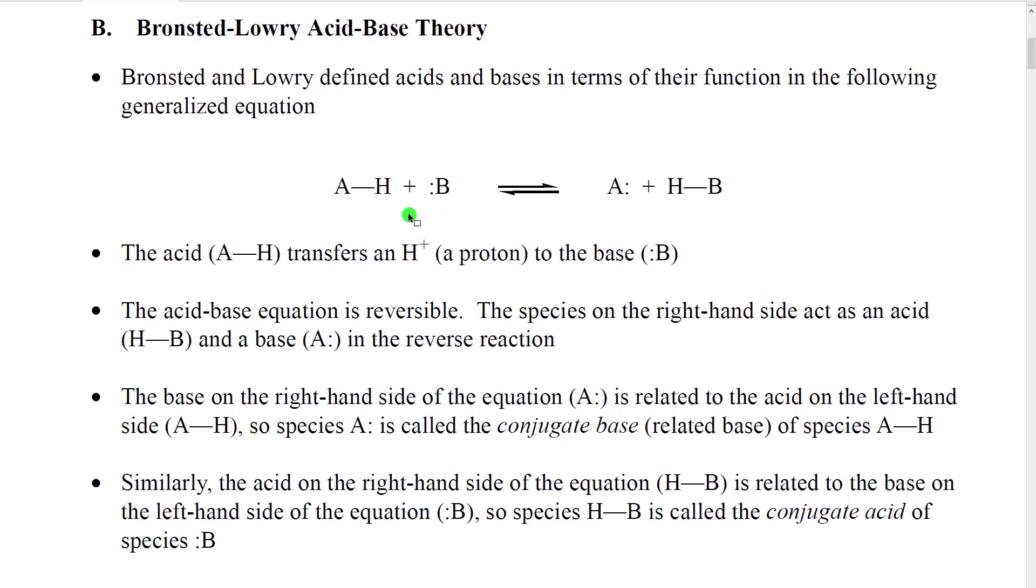In the Bronsted-Lowry acid base theory, what they believed was that the base would use this pair of electrons to make a bond to this hydrogen on the acid and that the hydrogen would release this other pair of electrons to go onto the acid. This would create these products where now the hydrogen atom was attached to the base using what used to be a lone pair of electrons and the acid would now have a lone pair. So an acid was defined as a species which transferred a hydrogen plus which we often call a proton because a hydrogen plus has just one proton in its nucleus and no electrons. So we would transfer that hydrogen plus to the base. Or you could also say that a base grabs a hydrogen plus from an acid so it takes it away which is sometimes a more useful way to think about it.